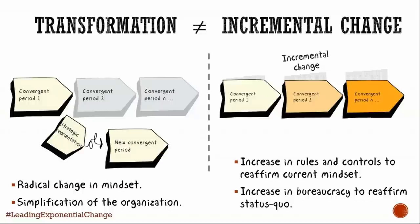Any convergent period in incremental change is going to add more bureaucracy or more rules to make sure nothing stops you from going in that direction — so there is no real transformation. The company is improving all the time in terms of values and way of work, but there is no disruption. You take the ideas from the previous convergent period, improve them, and continue walking exactly in the same direction. This is what we see in many countries — instead of reinventing, they keep walking in the same direction with the same mindset, reaffirming the status quo. After a transformation, you do need a period of incremental change.